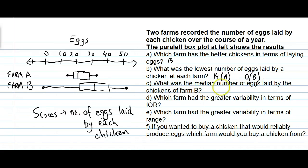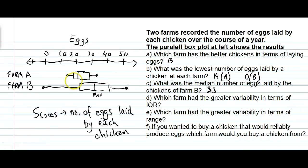Question C: what was the median number of eggs laid by the chickens at farm B? The median is the vertical line in the middle of the box. That seems to correspond to about 33, so 33 was the median number of eggs laid by the chickens at farm B. Question D: which farm had the greater variability in terms of the interquartile range? The interquartile range is represented by the box, which starts at Q1 and ends at Q3. The larger IQR is clearly farm B — the interquartile range for farm B stretches over a much wider range of eggs than it does for farm A. So farm B had greater variability in its IQR.